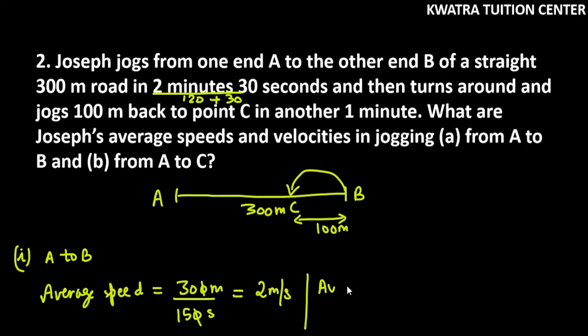Now, we can easily calculate average velocity. Velocity kya ho ga? Aapka total displacement over total time taken. A se B tak total displacement bhi humara distance jitna hi ho ga. So yes, 300 over 150 time bhi utna hi laga hai? Two meter per second.